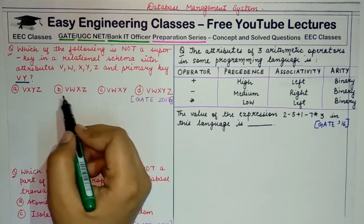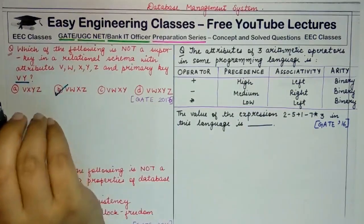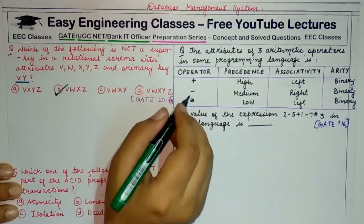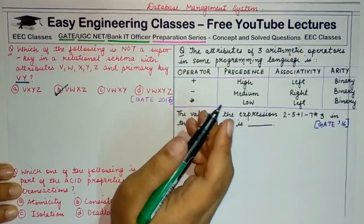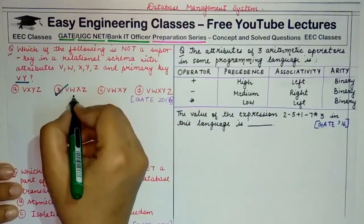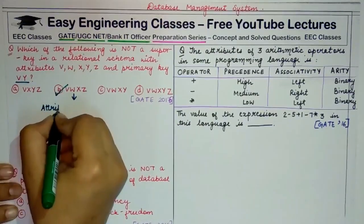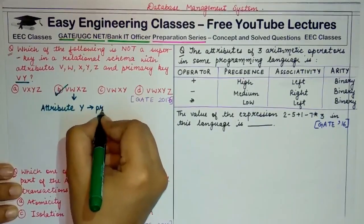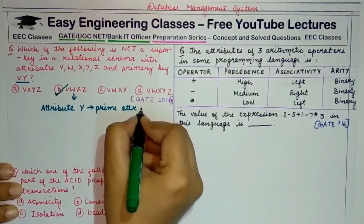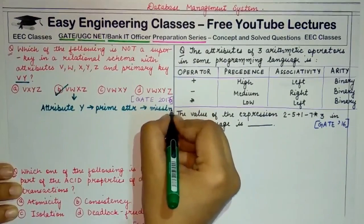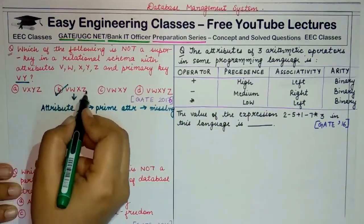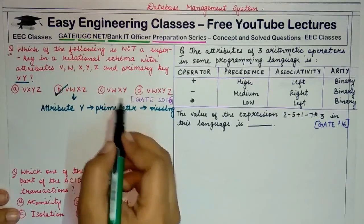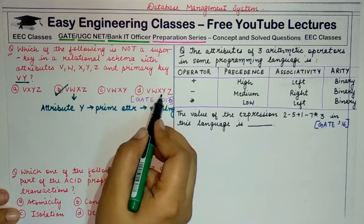Option B does not have Y, so you can clearly mark option B as your answer. It will never happen that a super key has only a subset of the attributes present in the primary key. A super key must have all primary key attributes plus possibly redundant ones. Since attribute Y — a prime attribute, meaning it is part of the primary key — is missing from option B, V, W, X, Z cannot be a super key. Options C and D both contain V and Y, so option B is the answer.